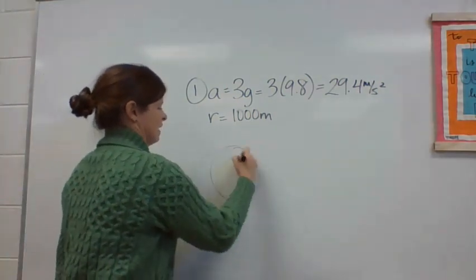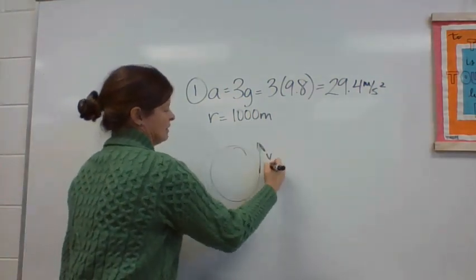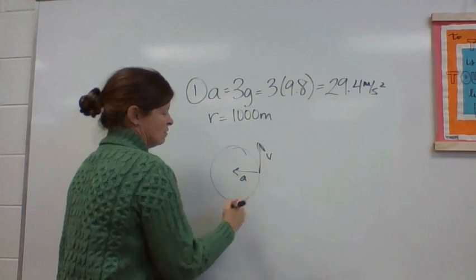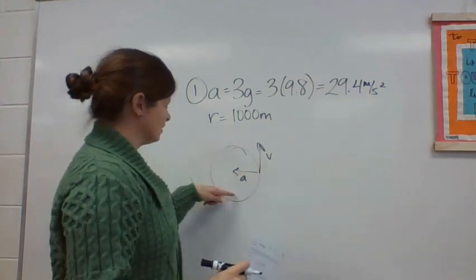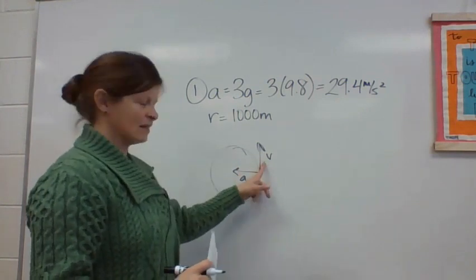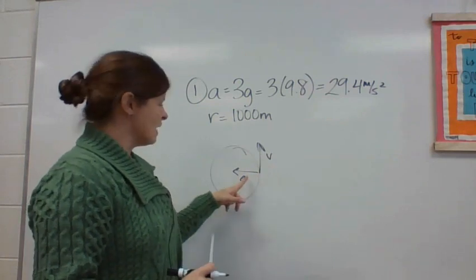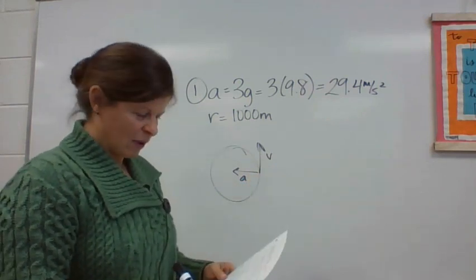So my vector sketch, it doesn't matter where you draw, what location about the circle, but the velocity is always a tangent to the circle, and acceleration is always at a right angle, pointing towards the center.